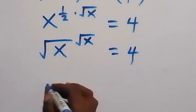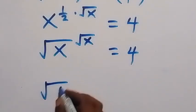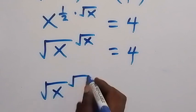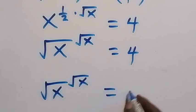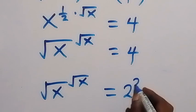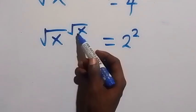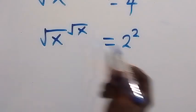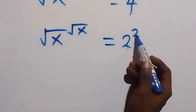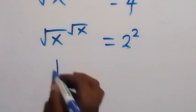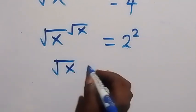This will be root x raised to power root x, which now equals 2 raised to power 2. From here, since we have a number raising to that same number, also from here a number raising to that same number, we can conclude that root x here is equal to 2.